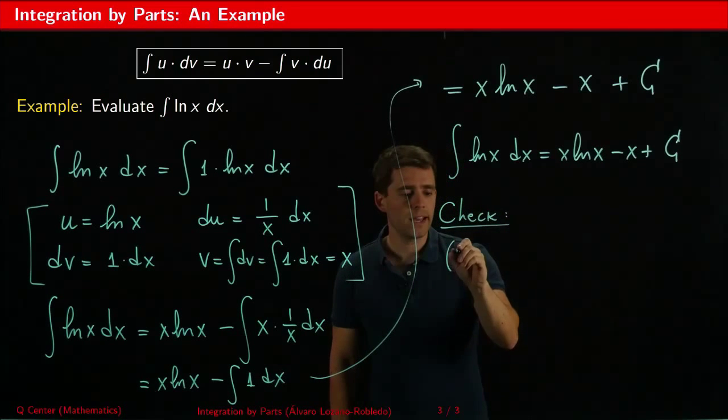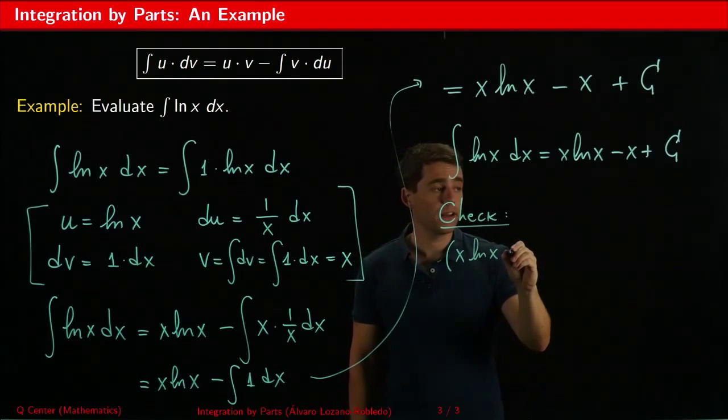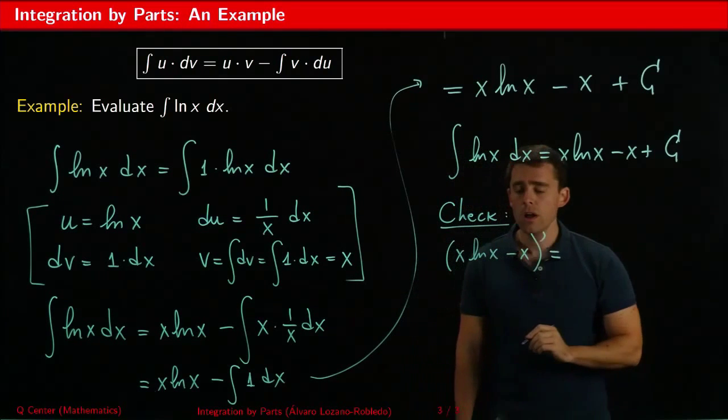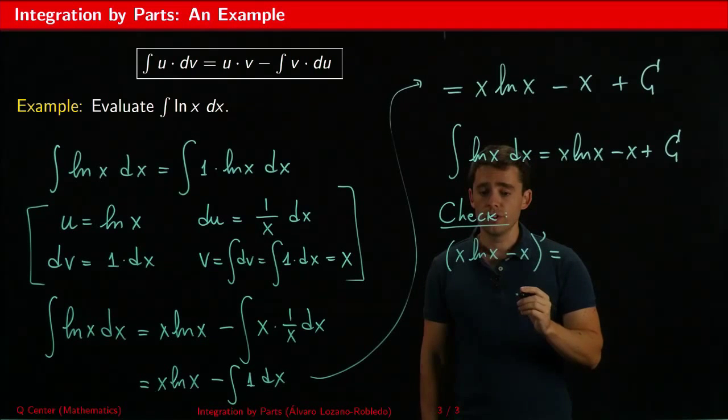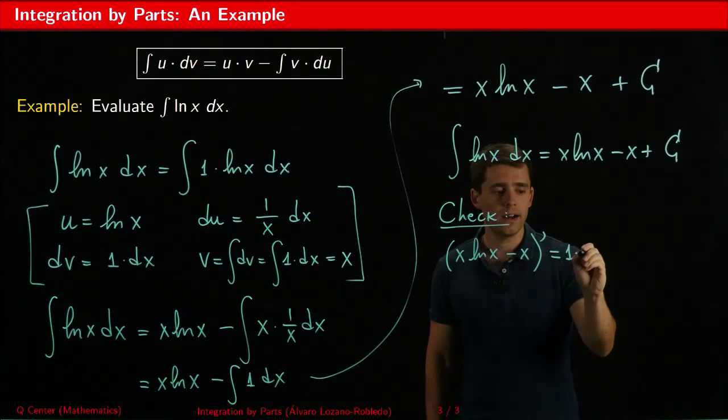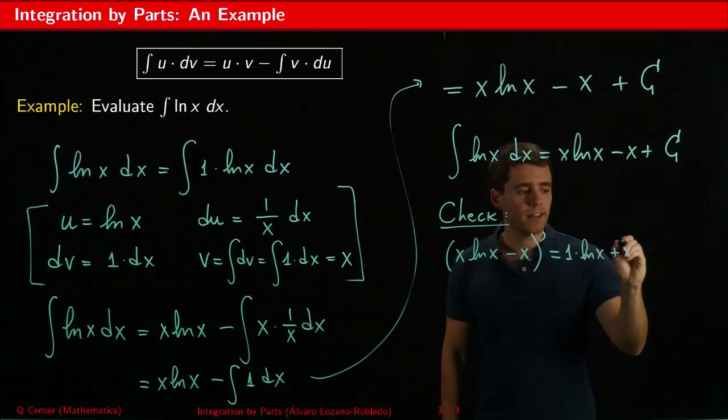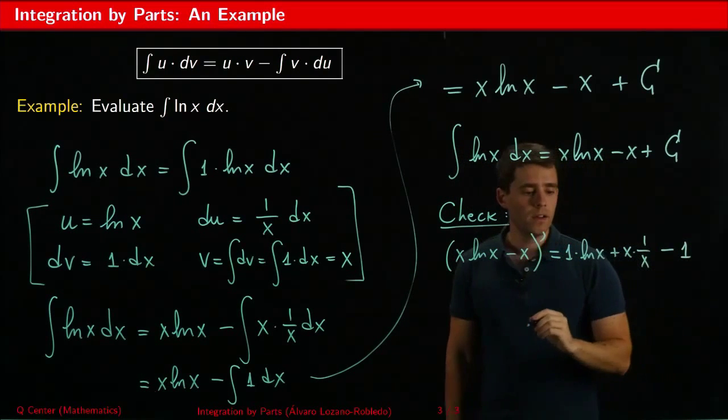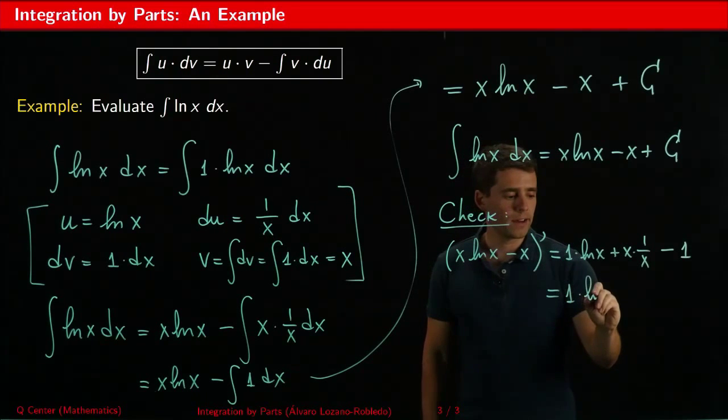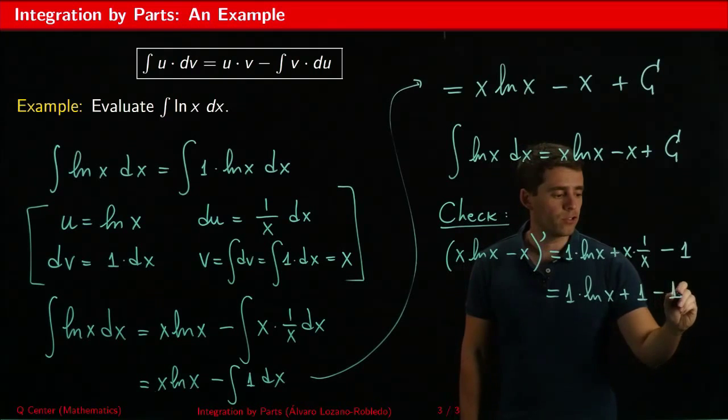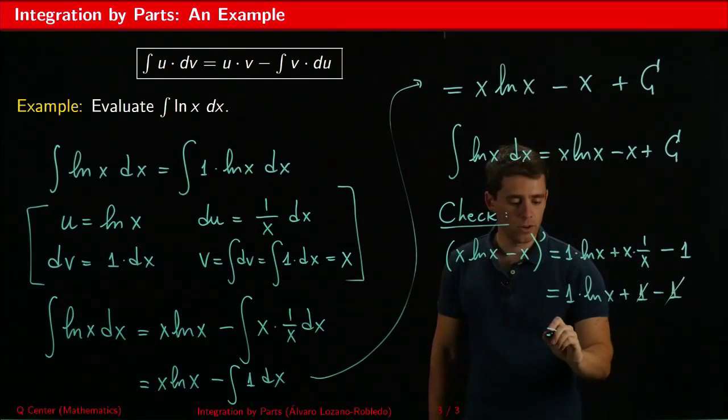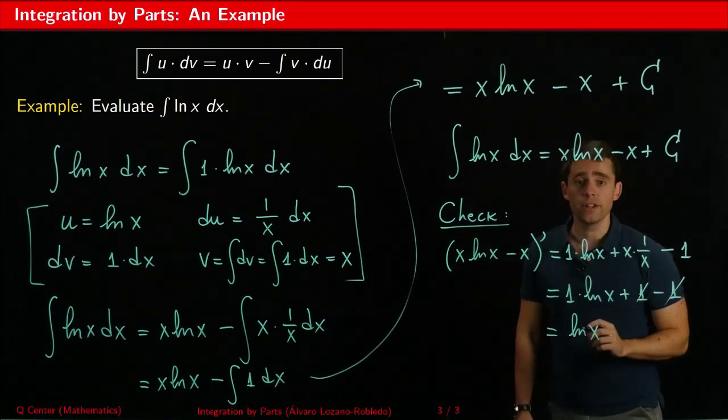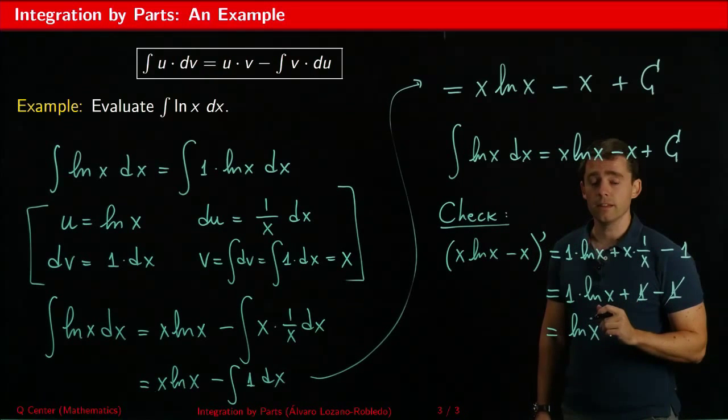So we need to take a derivative of x ln x minus x and hopefully we should get ln x back. So the derivative of x ln x we need to use the product rule. So the derivative of x is 1 times ln x plus x times the derivative of ln x which is 1 over x minus the derivative of x which is 1. This is 1 times ln x plus 1 minus 1. The 1 and the 1 will cancel out and I just get ln x back.